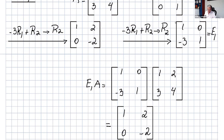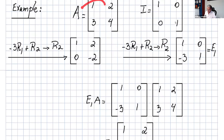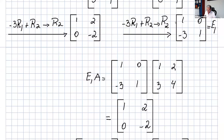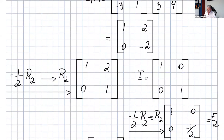So there are two ways to obtain this matrix: apply the row operation directly to A, or find the elementary matrix from I and multiply it on the left of A. Both give the same result. Now let's continue to make the leading entry in row 2 equal to 1.